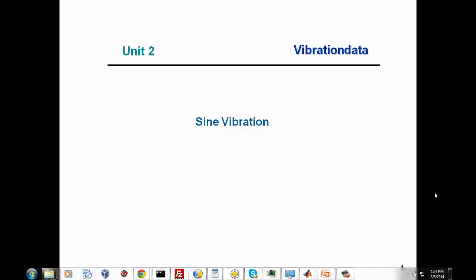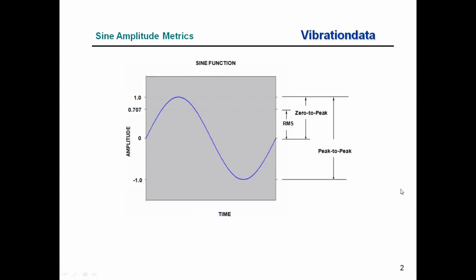Let's talk about sine vibration and some amplitude metrics. Here we have a one-cycle sine function, with amplitude on the y-axis and time in seconds on the x-axis. This particular sine function has an amplitude of 1. There's also an RMS, or root mean square value, of 0.707, which equals the square root of 2 divided by 2. Sometimes when discussing sine functions, we use the RMS metric.